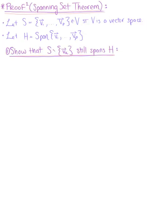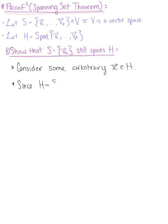In the proof of part 1, we want to show that S \ {v_k} still spans H. We begin by considering some arbitrary vector x in H. The goal is to show that this arbitrary vector x can be rewritten as a linear combination of the preceding vectors. Since H equals the span of v1 through v_p, we can rewrite x as follows.